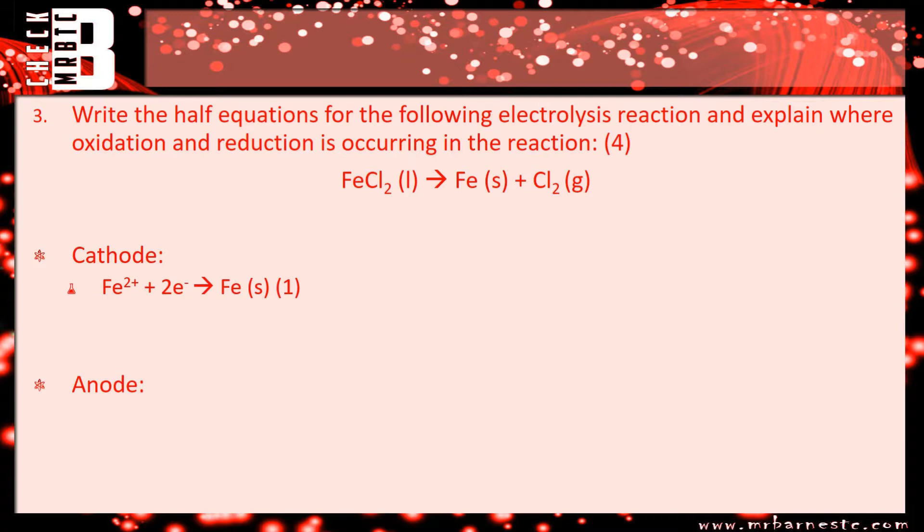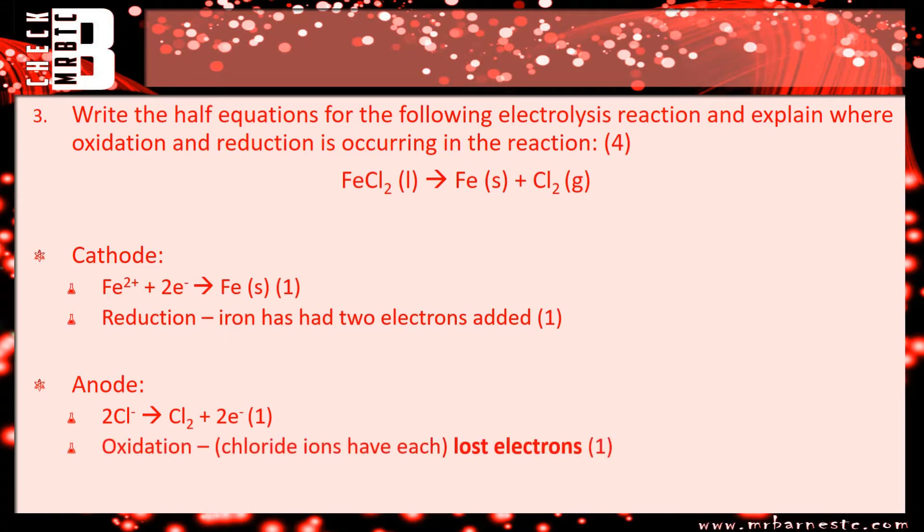And then your anode, you've got your Cl-. We've already talked about that in the previous question. It has therefore had to lose electrons to go back to it, which is oxidation. So your half equation is 2Cl- goes to Cl2 + 2e-, and it's oxidation because it's lost electrons.